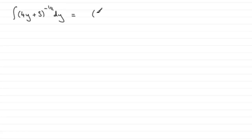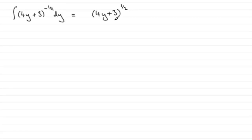Essentially it's going to be 4y plus 3, and we just add 1 to the power minus one half, which gives us the power one half. What I normally do for something like this is differentiate this, see what I get, and adjust the constant at the front to compensate.